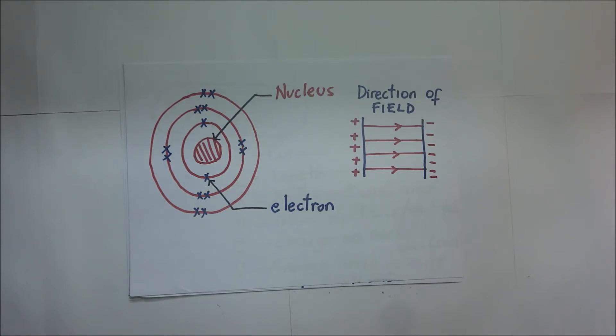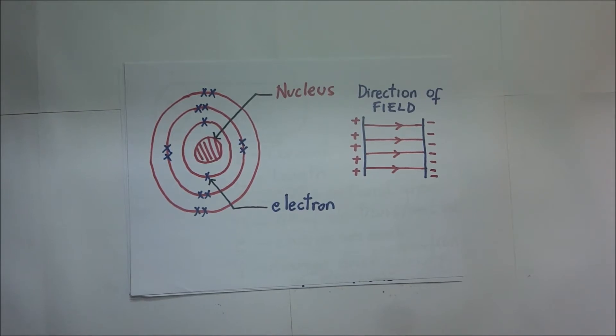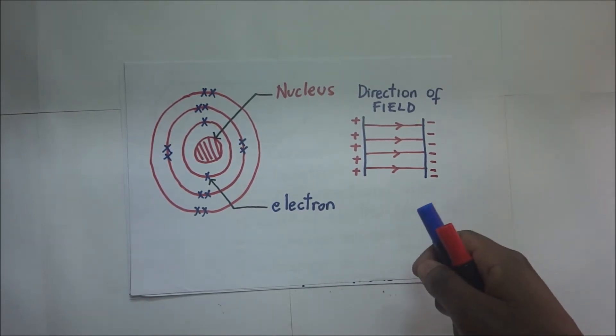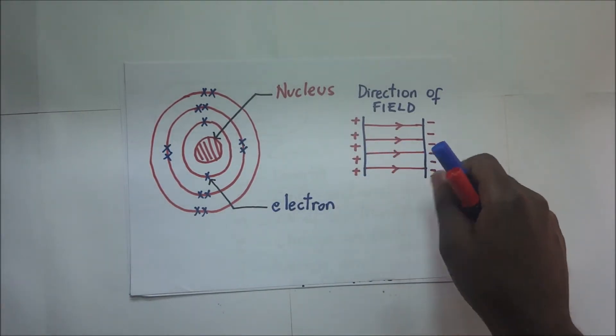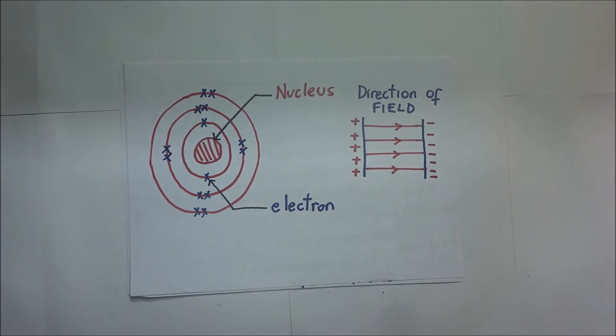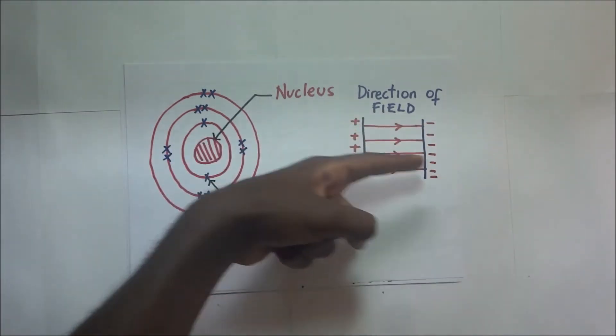When a potential difference is put across the metal, the free electrons are aligned in such a way that they move in the direction opposite to the direction of the field. By this I mean that the electrons are attracted towards the positive terminal. Now, when I talk about direction of the field from electrostatics, we know that the field moves from positive to negative. That's the direction of the field.